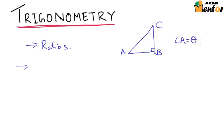Then sine theta is nothing but perpendicular by hypotenuse. Here the perpendicular is the opposite side, that is BC, and hypotenuse is AC, the longest side.